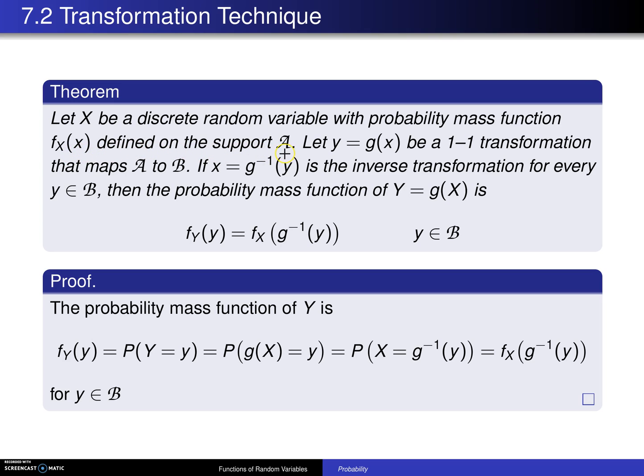Let Y equals g of X be a one-to-one transformation that maps script A to script B.